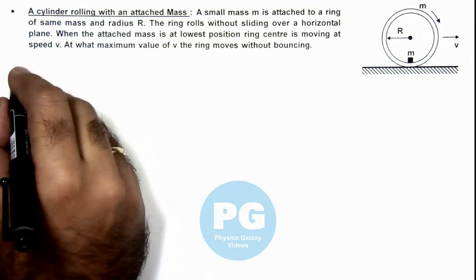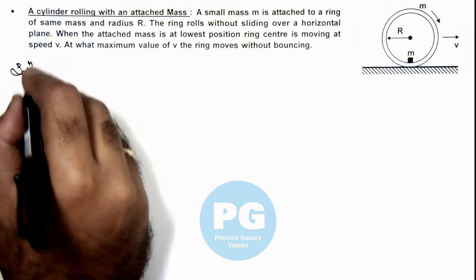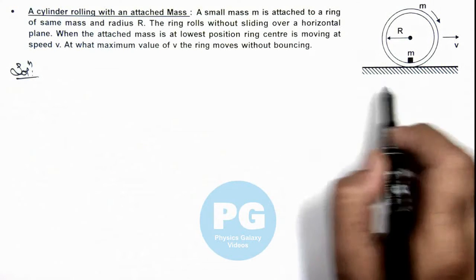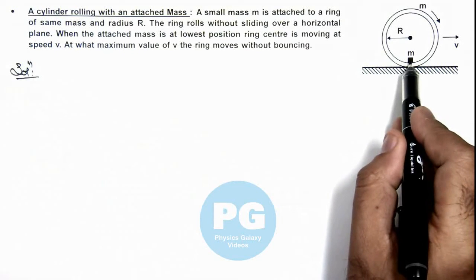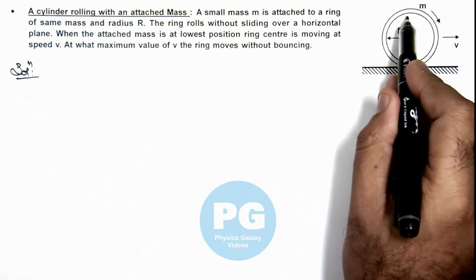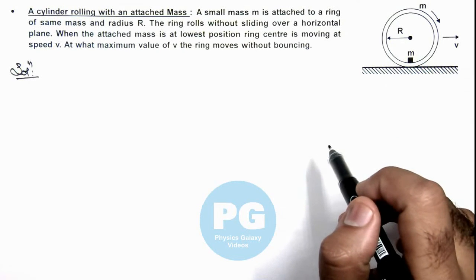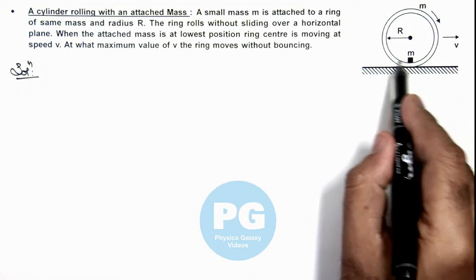Now in this situation, if we wish to calculate the situation when the ring is moving without bouncing, that means this mass m when it reaches the top, till that instant normal reaction at bottom must not be zero, because when this mass is revolving about the center it'll be experiencing relative centrifugal force in outward direction.